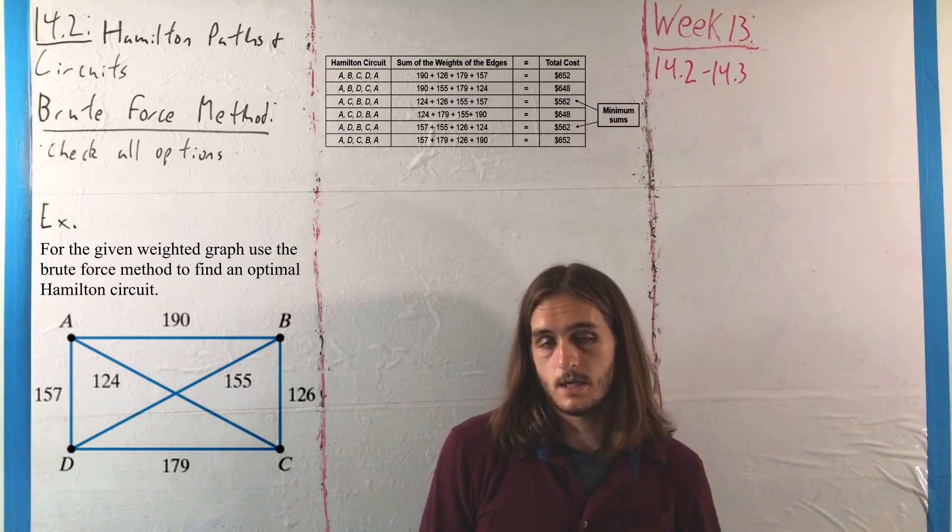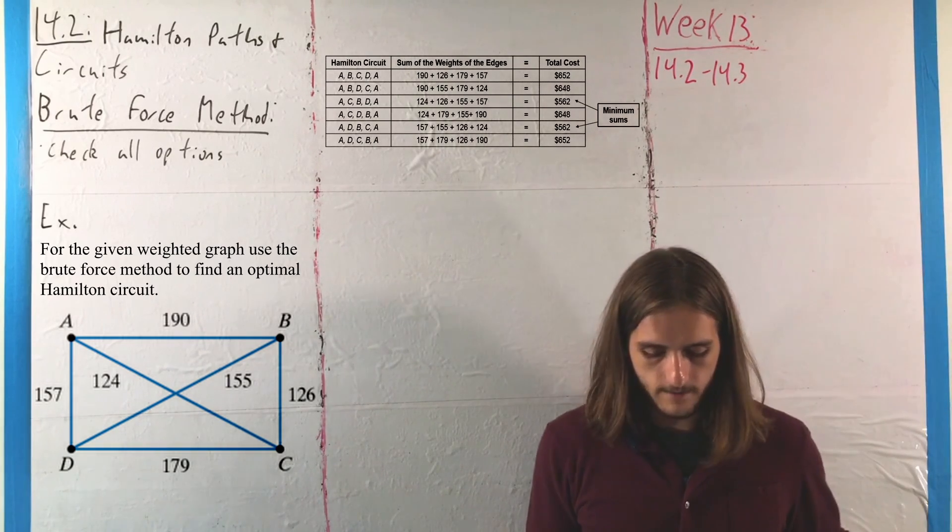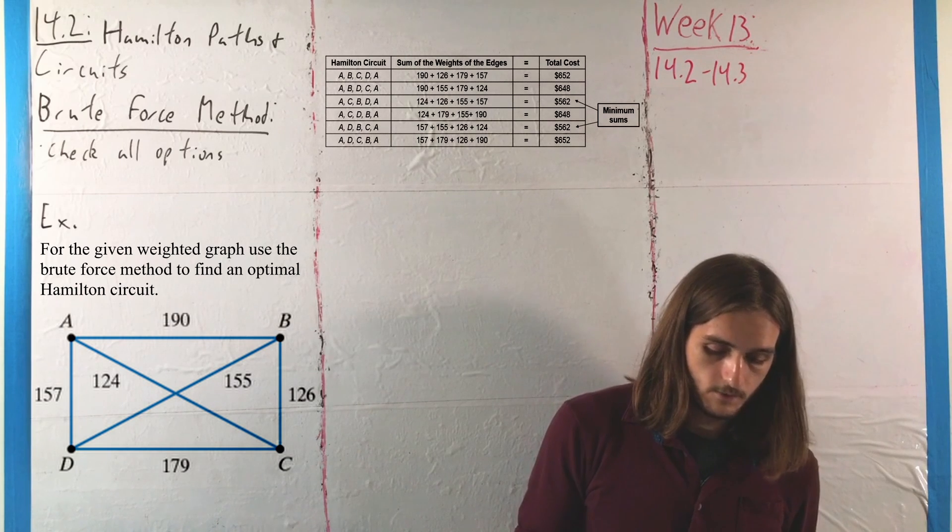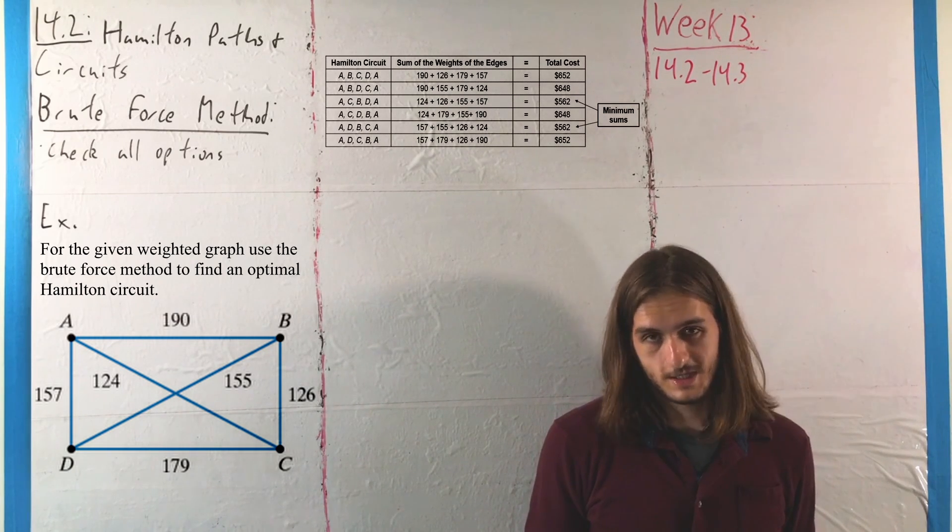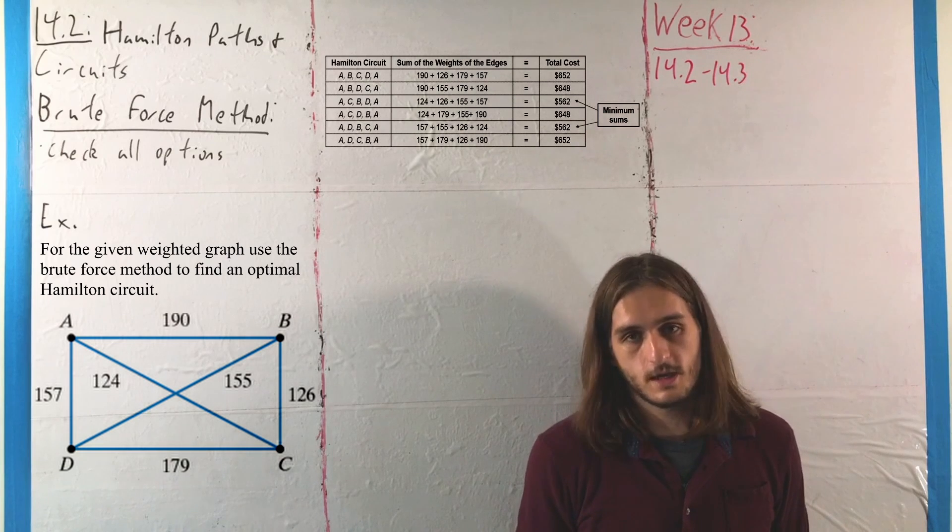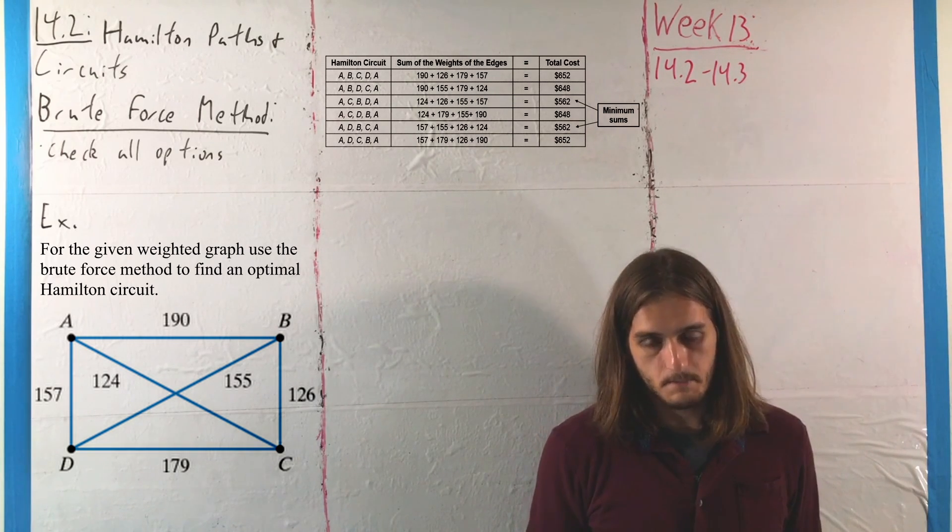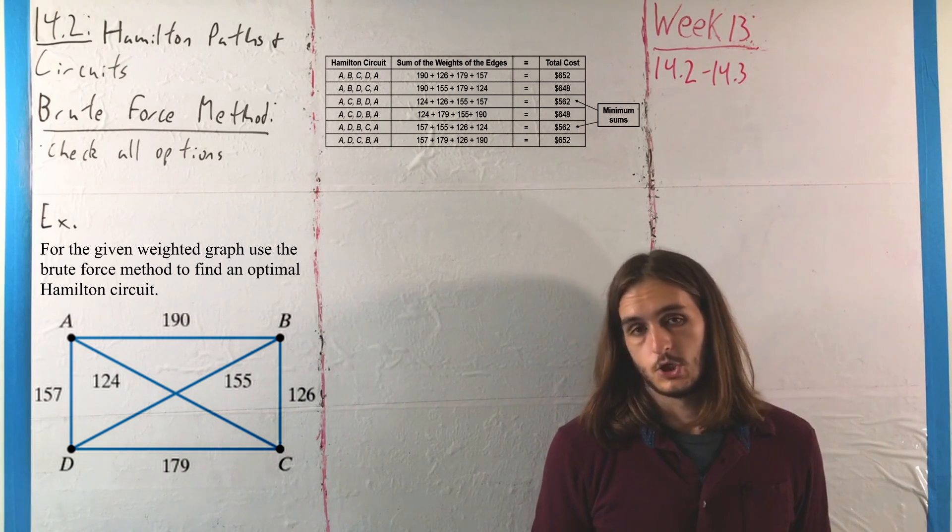We can see this would give us two potential optima. Either we have the route ACBDA for a total of $562, or we can do ADBCA for again a total of $562.